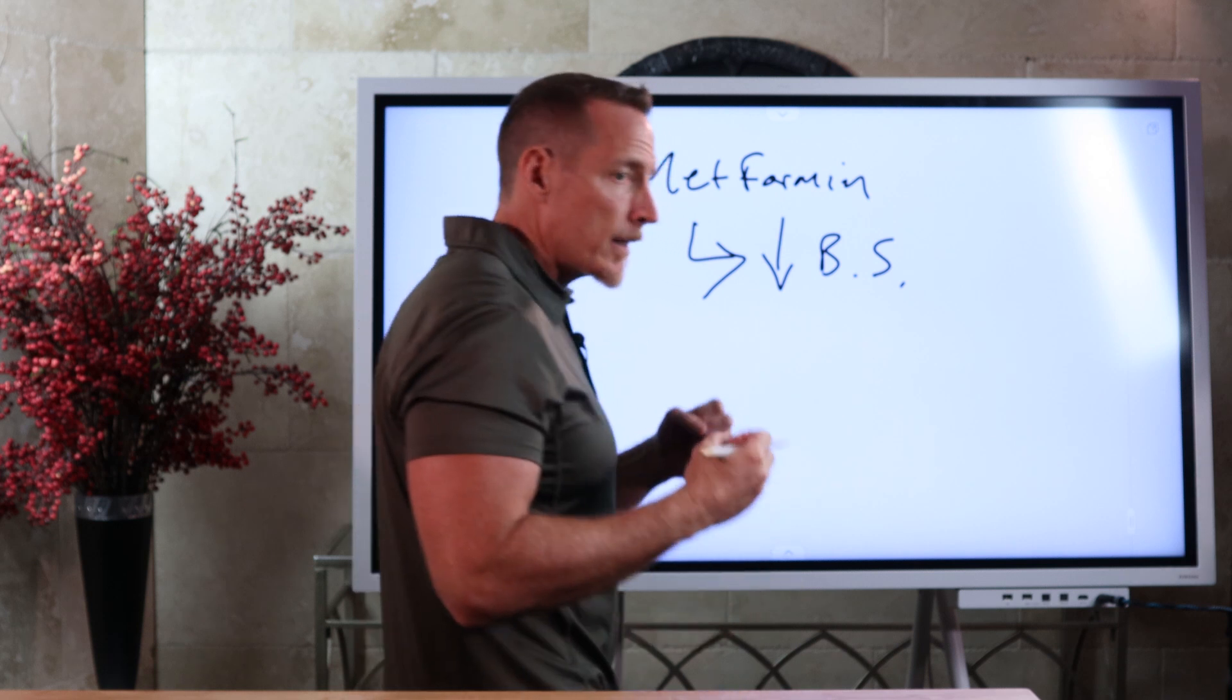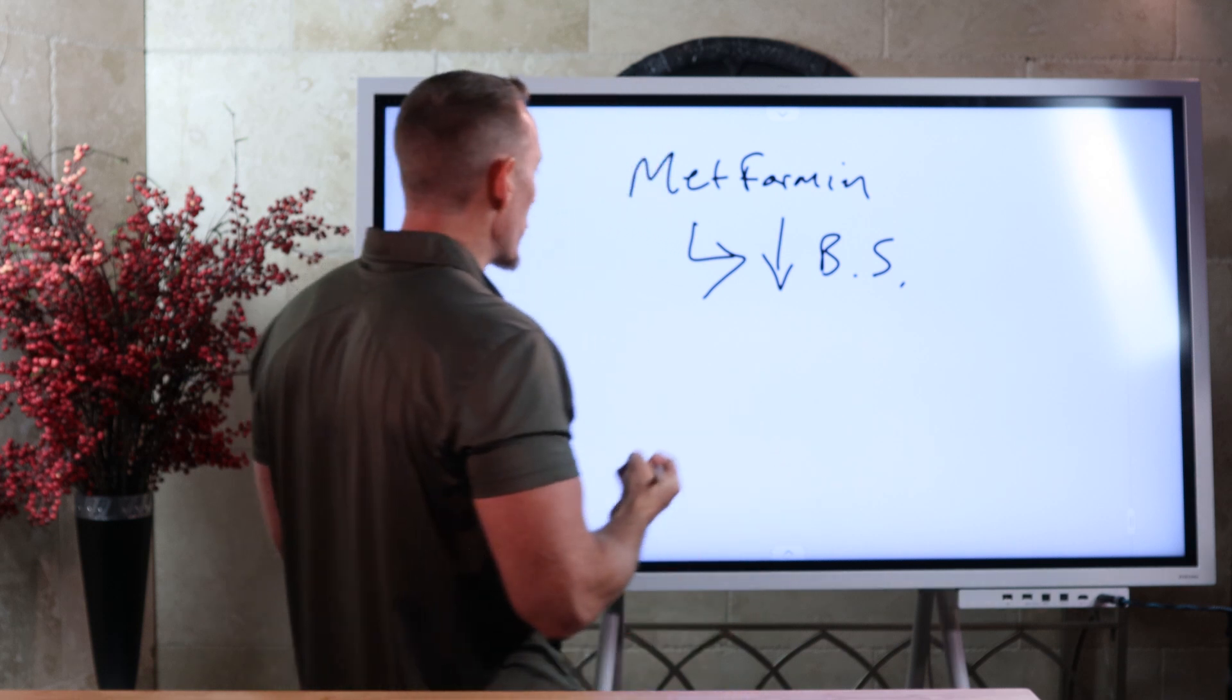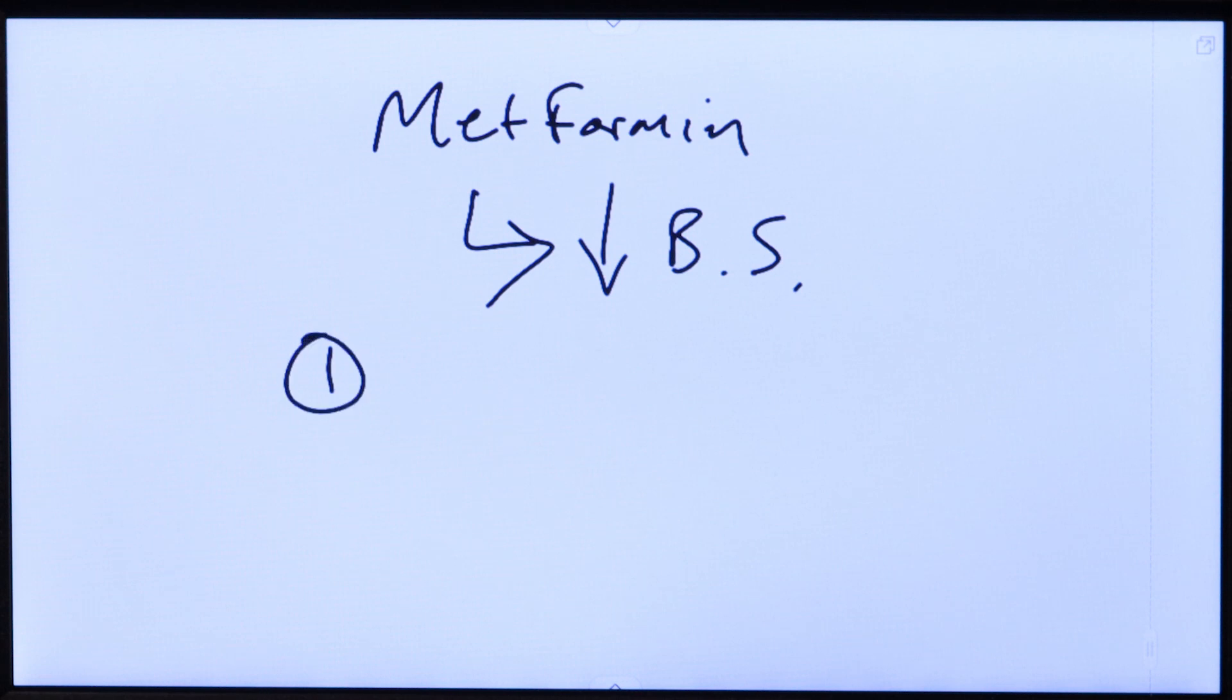Now, metformin is a great drug, and it lowers blood pressure extremely well, so it will reduce your blood sugar. But the problem with it, the longer you're on it, it has this potential to create major problems. One of the big problems that it can create is a loss of nutrition, a loss of nutrients. Now, there are three nutrients that metformin will affect over long periods of use.